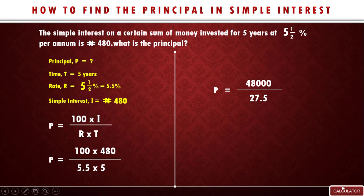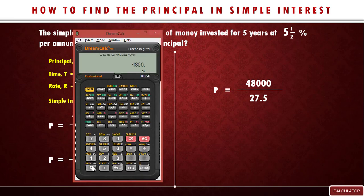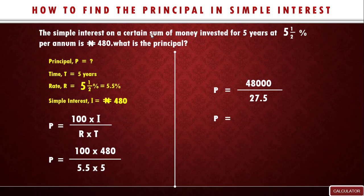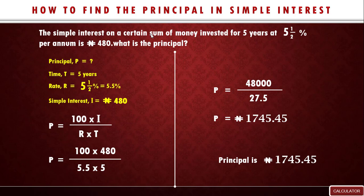Now let's use our calculator to get the value. 48,000 divided by 27.5 equals — that gives us 1745.45. We can approximate to 1745.45. So our final answer for principal is 1745.45 naira.